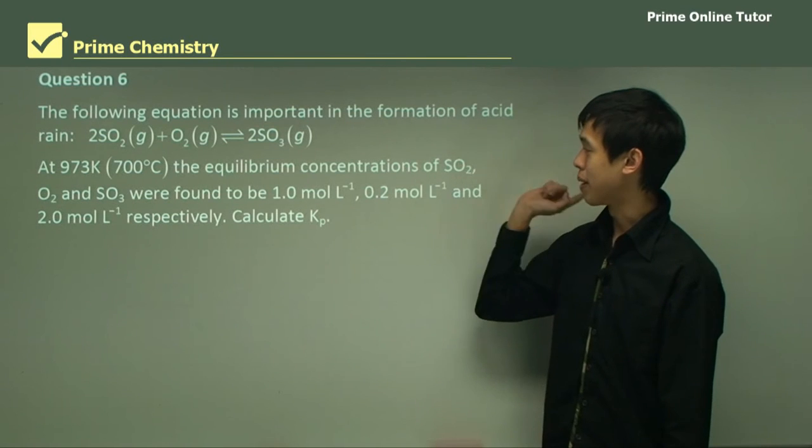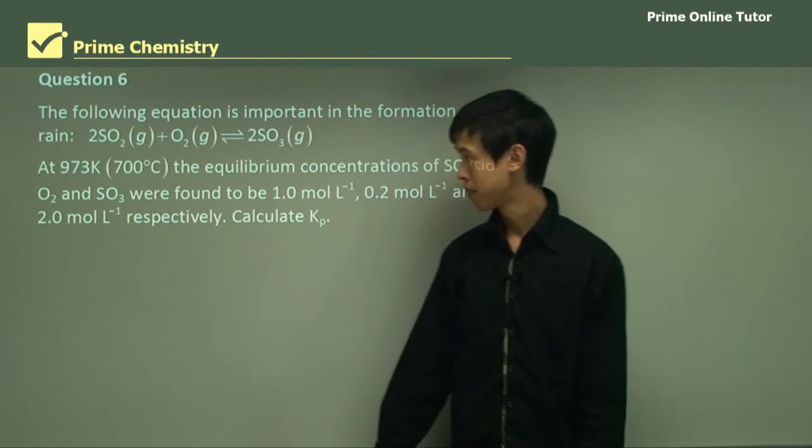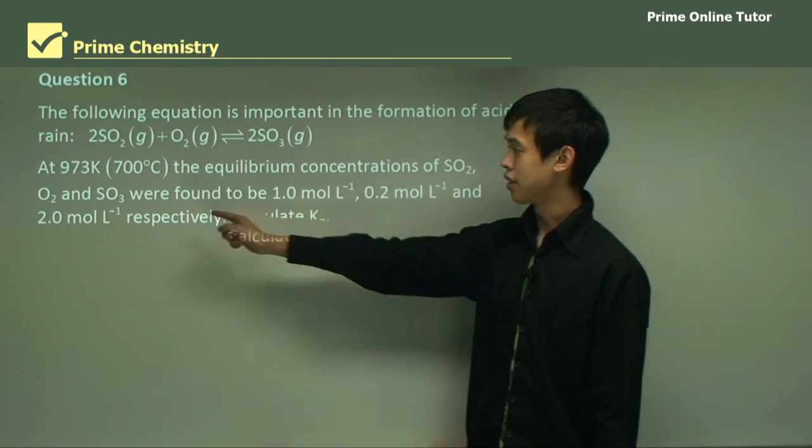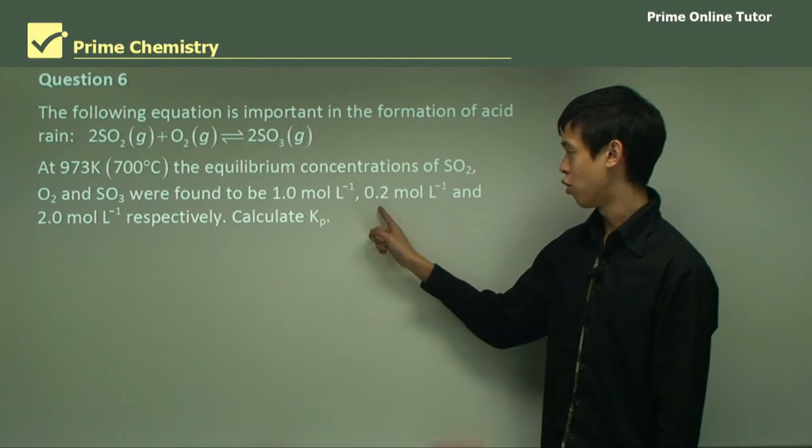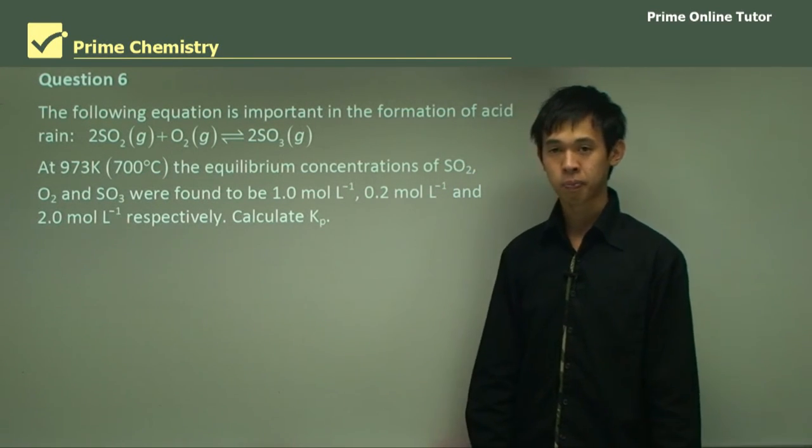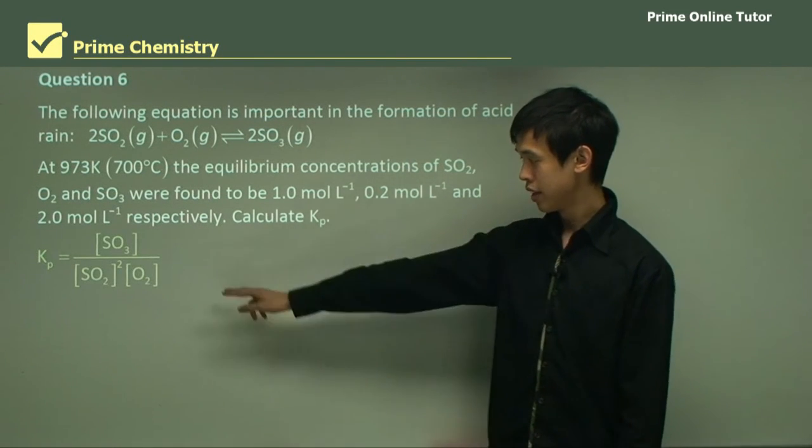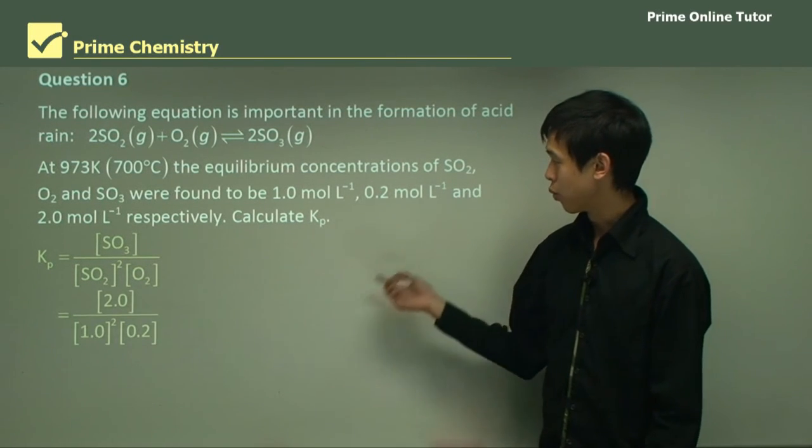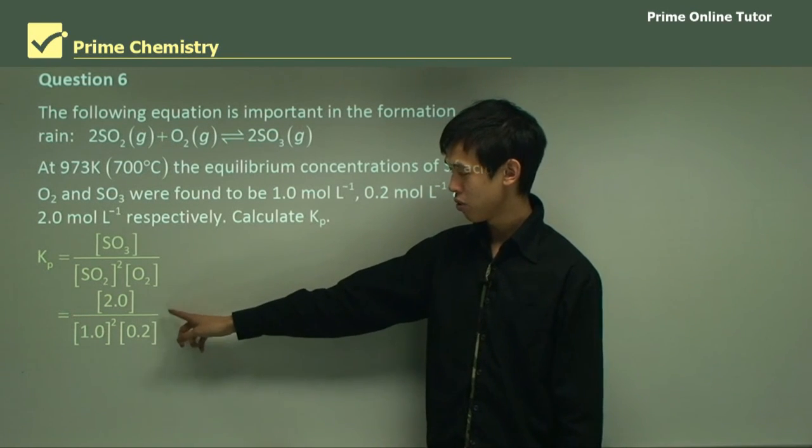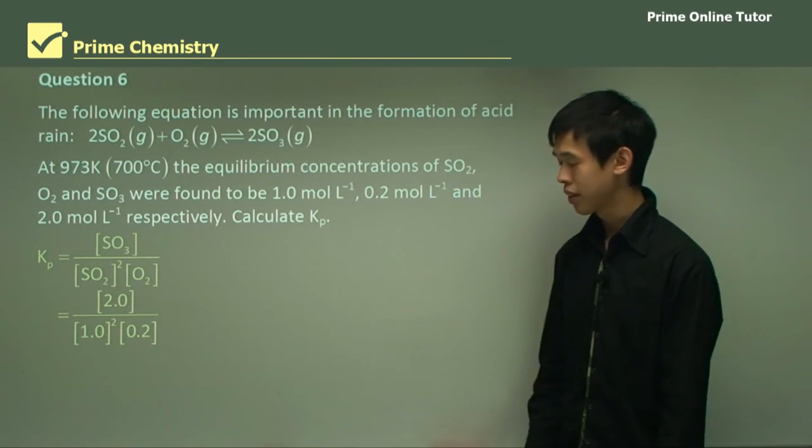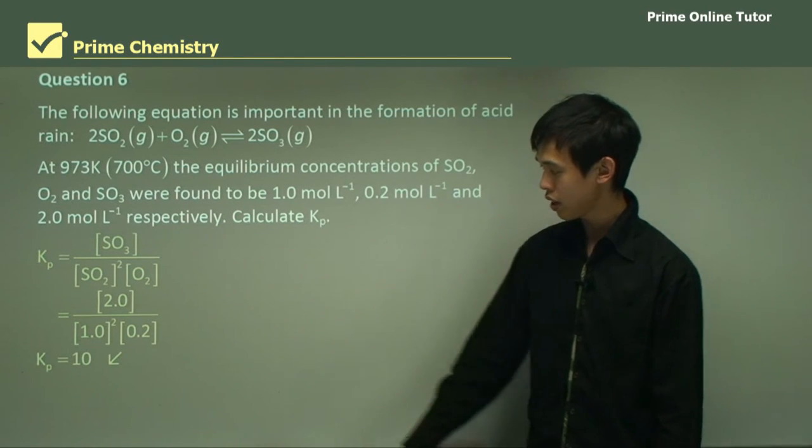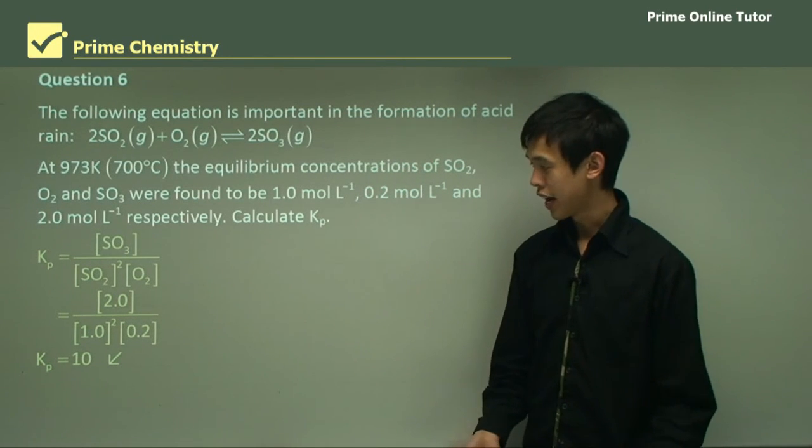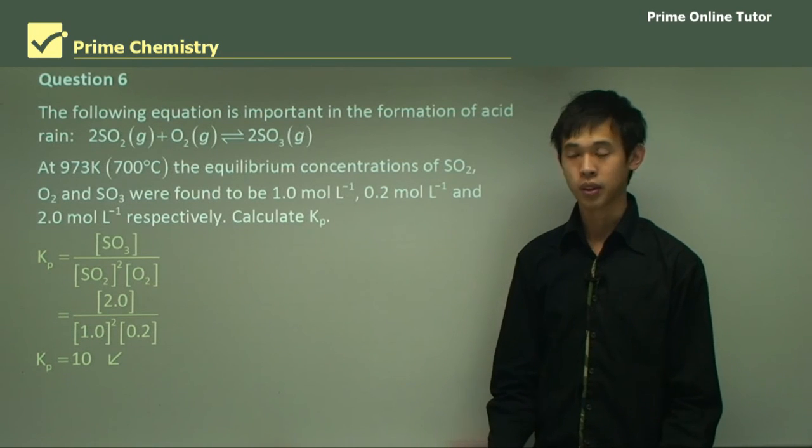So the following equation is important in the formation of acid rain, and that's the same equation that we saw. Now at 700 degrees Celsius, the equilibrium concentrations of SO2, O2 and SO3 are found to be 1, 0.2 and 2 moles respectively. So now we just have to calculate Kp. Here's the equation from the last question. So we just put in all the numbers and you get 2, 1 squared and 0.2. And if you do the calculation, you should get 10. So 1 times 0.2 is 0.2, and 2 divided by 0.2 is 10. And that's your answer.